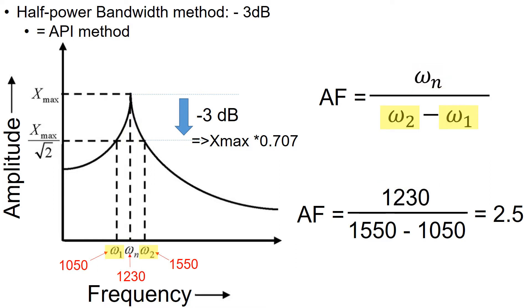After identifying the ωn, the next step is to identify the ω1 and ω2. To obtain ω1 and ω2 values, you simply multiply the peak amplitude value Xmax with 0.707. At 70% of the peak amplitude Xmax, you draw the vertical lines down to the x-axis, which gives you the ω1 and ω2. By placing the ω1 and ω2 values in the equation shown on the right, you will get the amplification factor of 2.5.